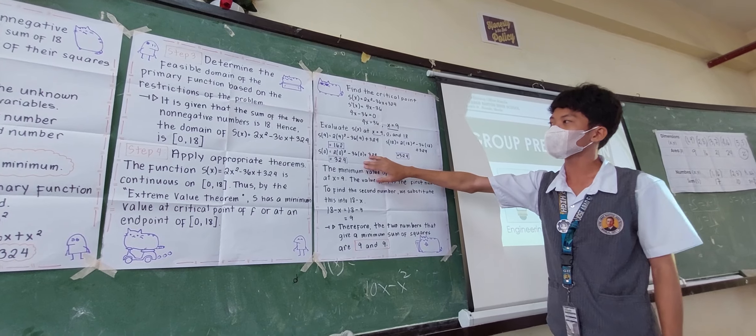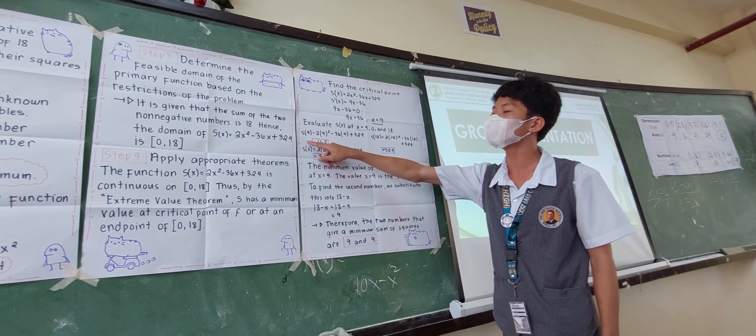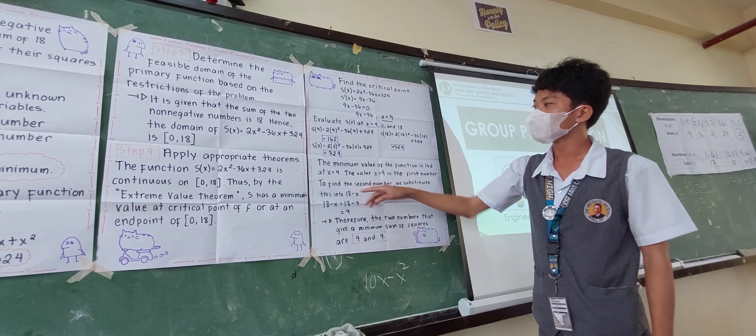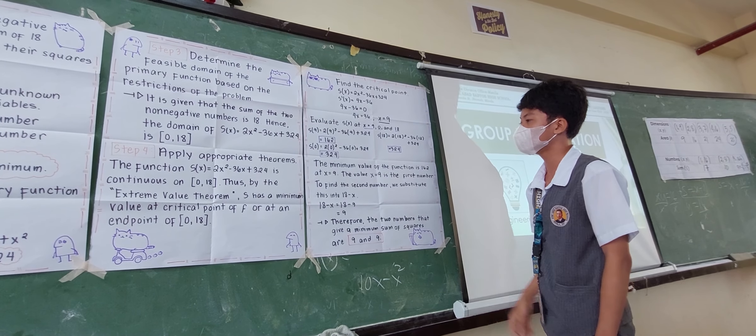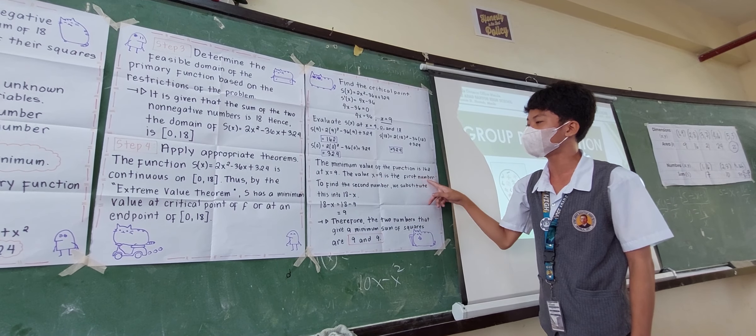By observing that, as you notice, the minimum value occurs at S of 9 which is 162. Therefore, the minimum value of the function is 162 at X equals 9. The value of X equals 9 is the first number.